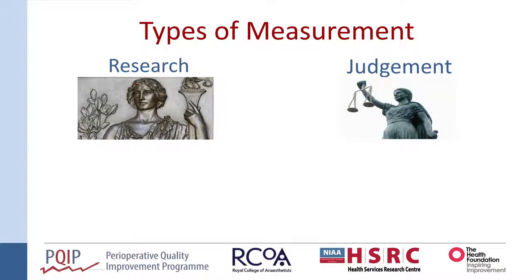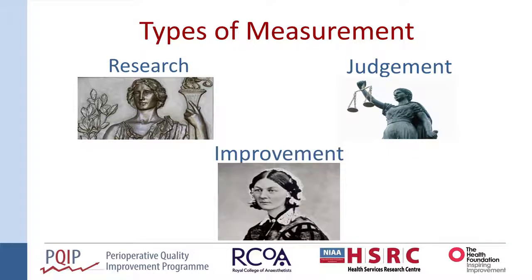So this is what we're talking about today: measurement for improvement. Here we see Florence Nightingale, who improved healthcare for the wounded on the front lines. She used graphical representations of data to improve levels of sanitation and ultimately outcomes for her patients. Measurement for improvement is used to demonstrate that any changes you make result in an improvement. It's a dynamic approach — you measure outcomes and processes within your system over time and you're continually learning.